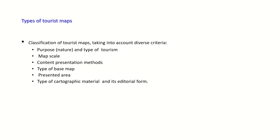Classification of tourist maps is a complex task. Tourist maps are commonly classified by the following criteria: purpose or nature and type of tourism, map scale, content presentation method, type of base map, presented area, type of cartographic material, and editorial form. These are the most commonly used criteria for classification of tourist maps.